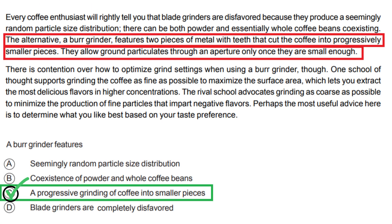According to the given paragraph, option C is correct because it states that a burr grinder features a progressive grinding of coffee into smaller pieces. The paragraph mentions that a burr grinder consists of two metal pieces with teeth that cut the coffee into progressively smaller pieces. This aligns with option C, as it describes the progressive grinding action of a burr grinder.